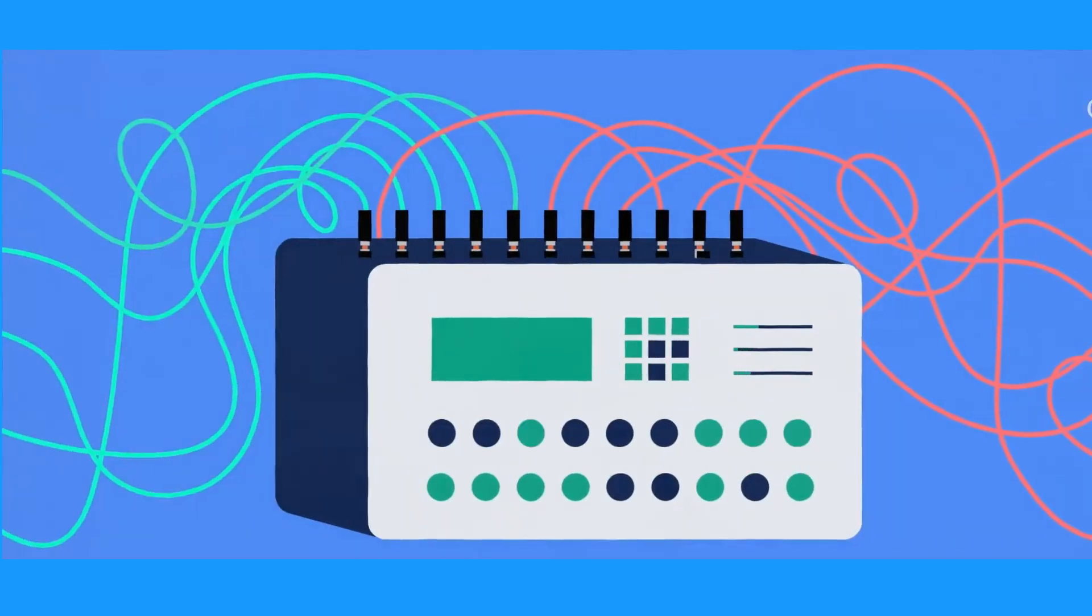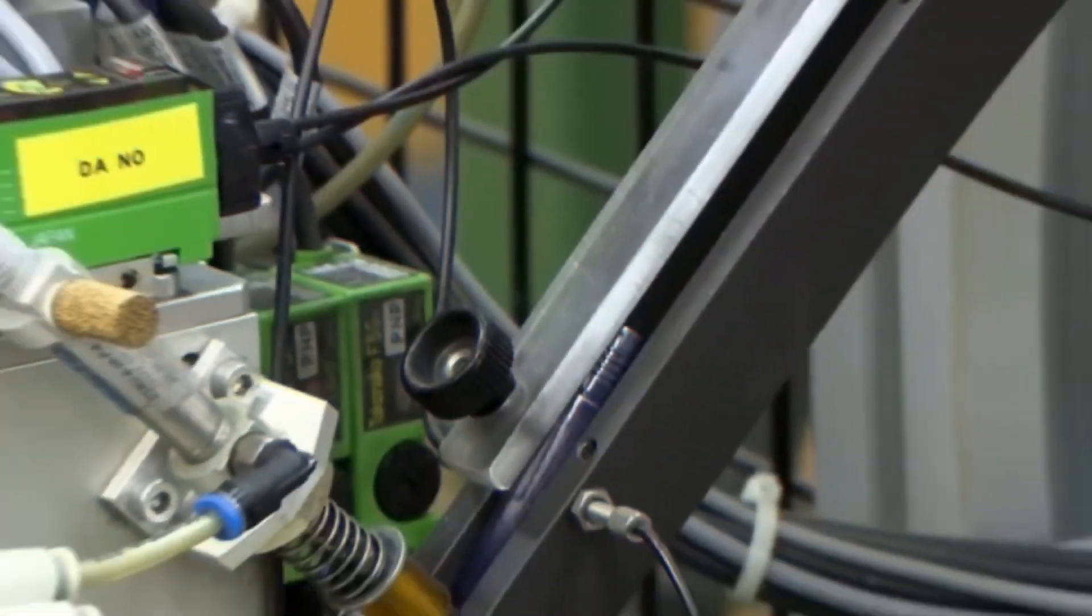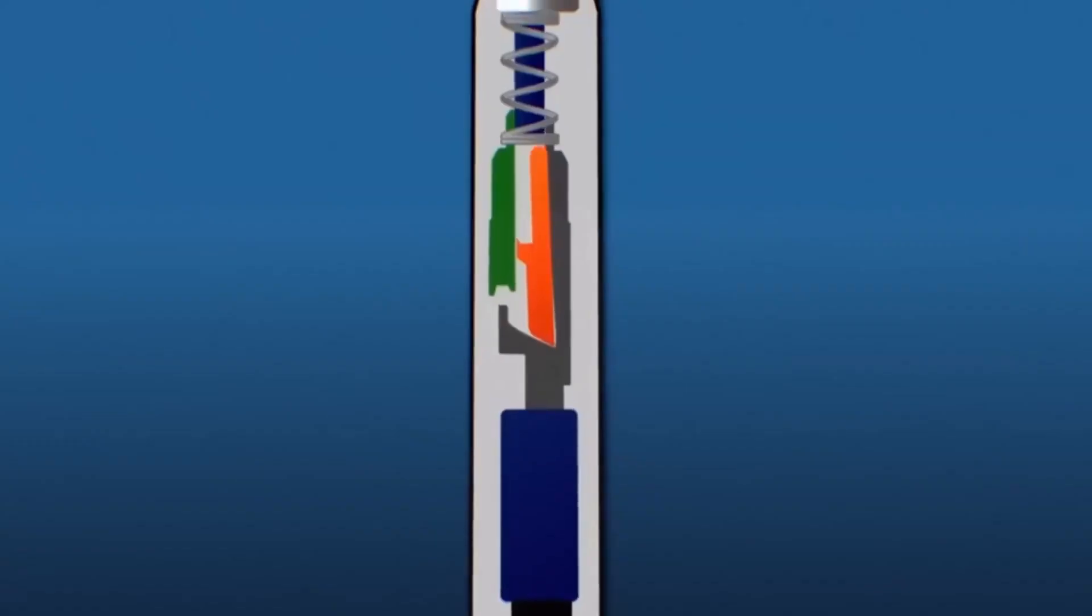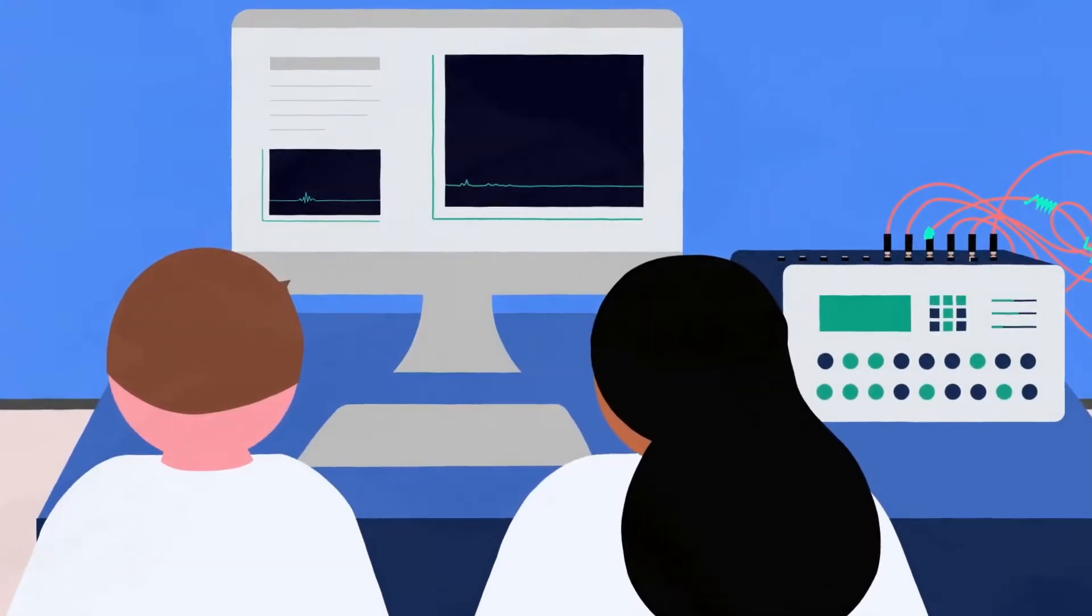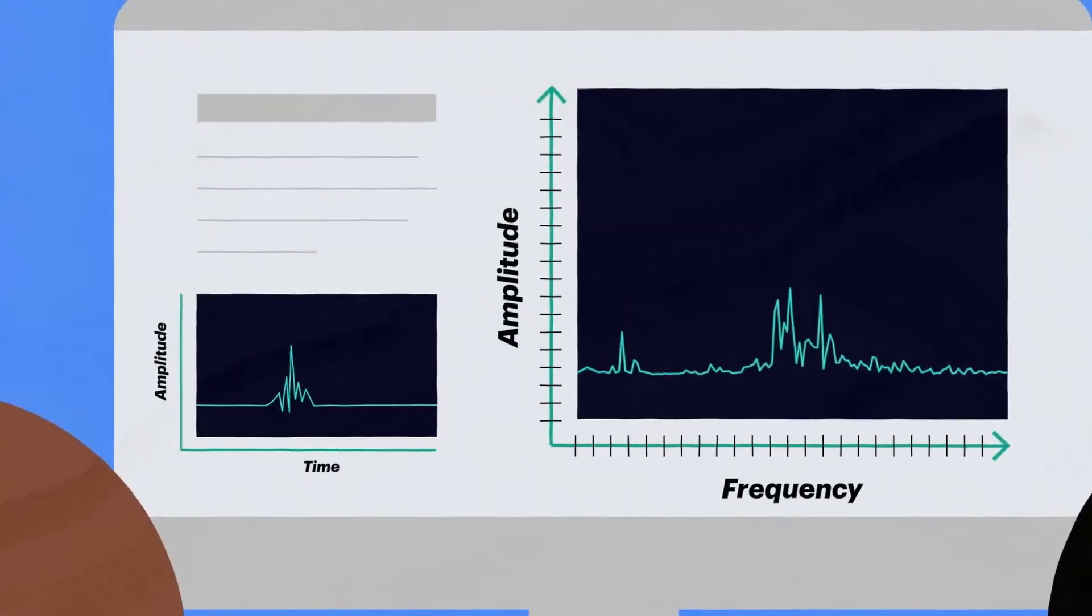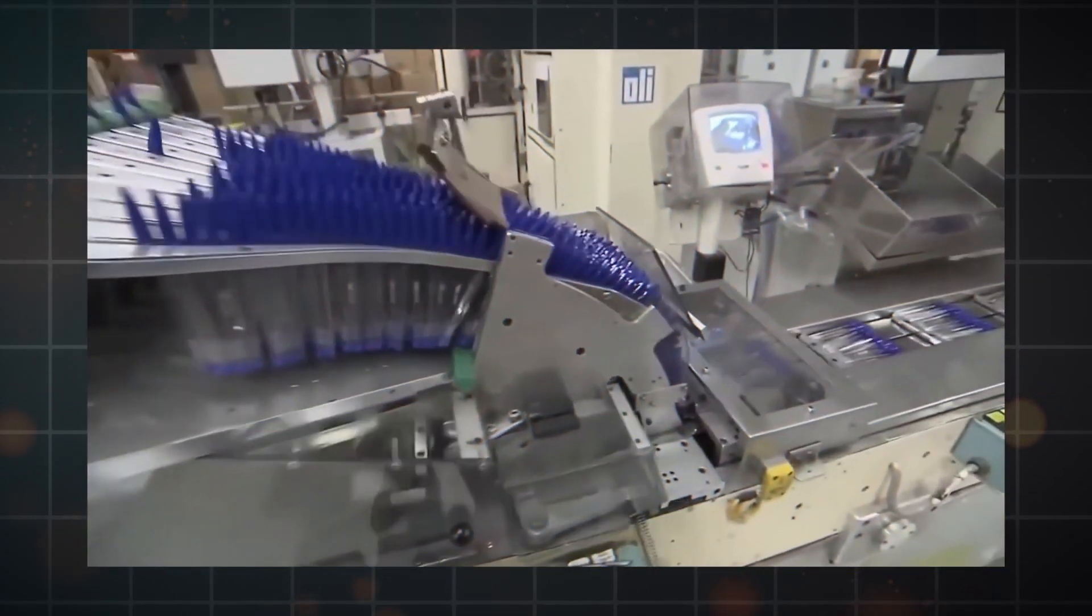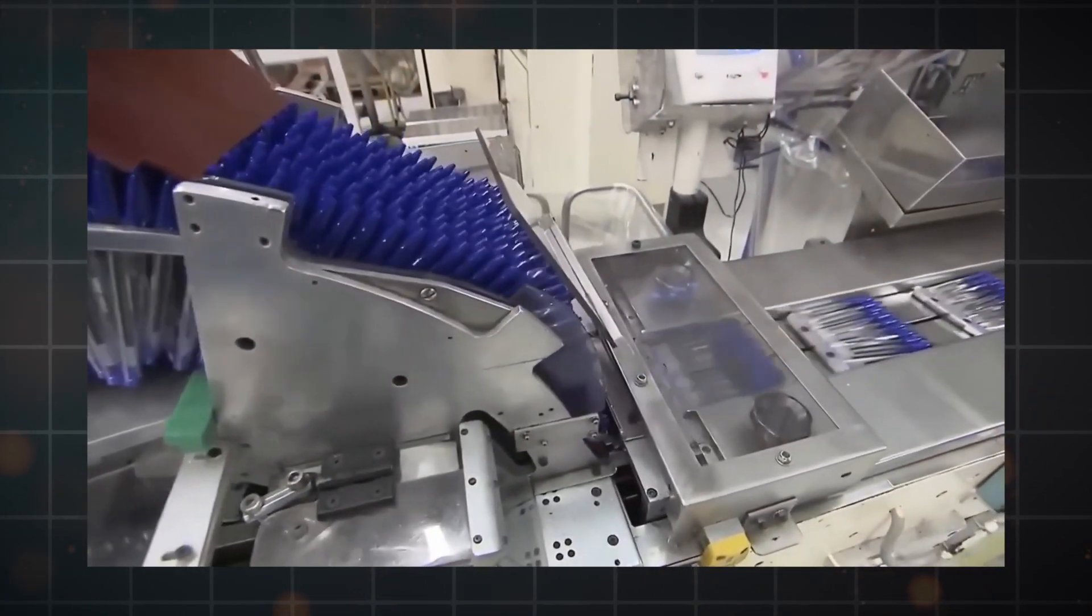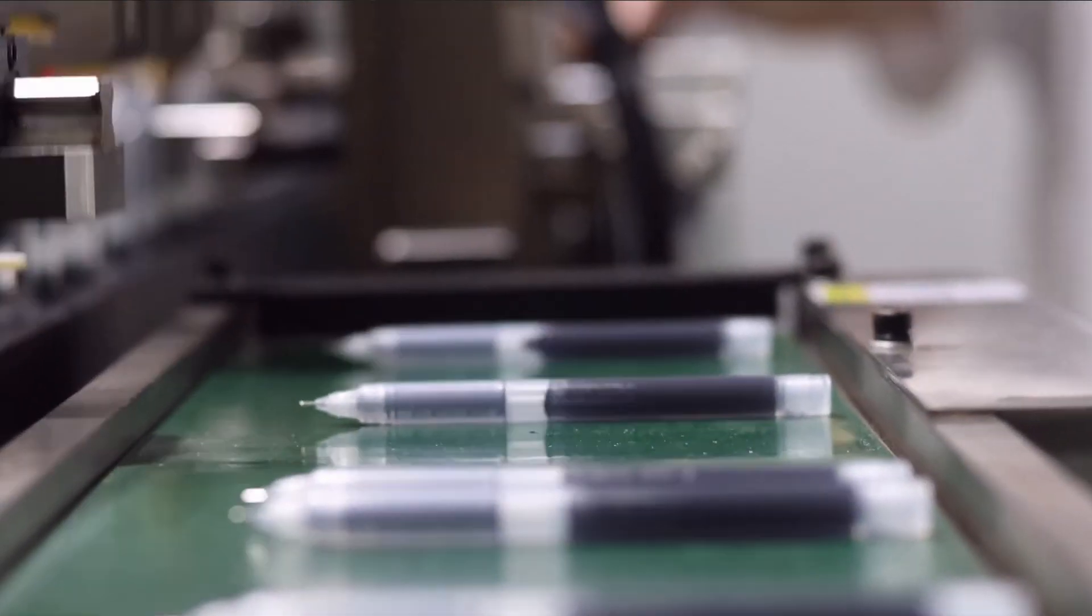Using acoustic emission sensors is another interesting part of testing quality. This new method listens to the sounds made by the pen's parts working together while it writes. The sound waves are analyzed to see if there are any irregularities or friction that could mean there's a problem with the pen's design or setup. This method is a very careful way to make sure that all of the pen's parts are working together properly, which makes writing smooth.